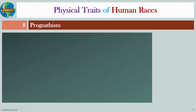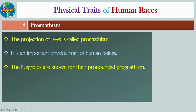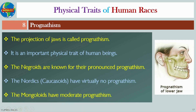Number eight: Prognathism. The projection of the jaws is called prognathism. It is an important physical trait of human beings. The Negroids are known for pronounced prognathism. The Nordics or Caucasoids have virtually no prognathism. The Mongoloids have moderate prognathism.